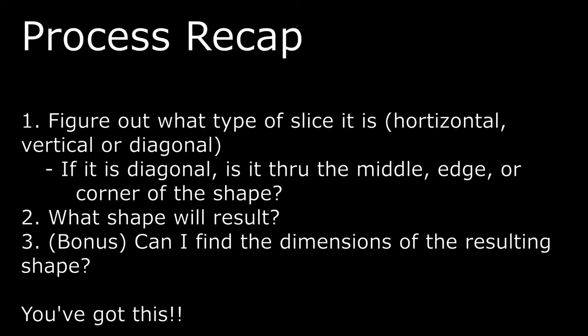Let's do a little recap. Great job, everyone. So first we looked at horizontal slices, then vertical, then three different types of diagonal slices. To capture the whole process: when we get these problems, we look at it and say, okay, what type of slice is it? Is it horizontal — does it go side to side? Is it vertical — does it go top to bottom? Or is it diagonal — does it go across at some angle? And if it is diagonal, is it cutting through the middle, just at the edge, or through the corner of the shape?